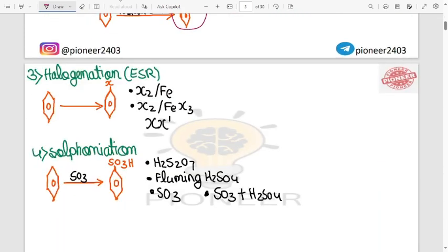If I talk about halogenation, if I talk about electrophilic substitution reaction, X2 Fe, X2 FeX3, then you will be able to use halogenation.